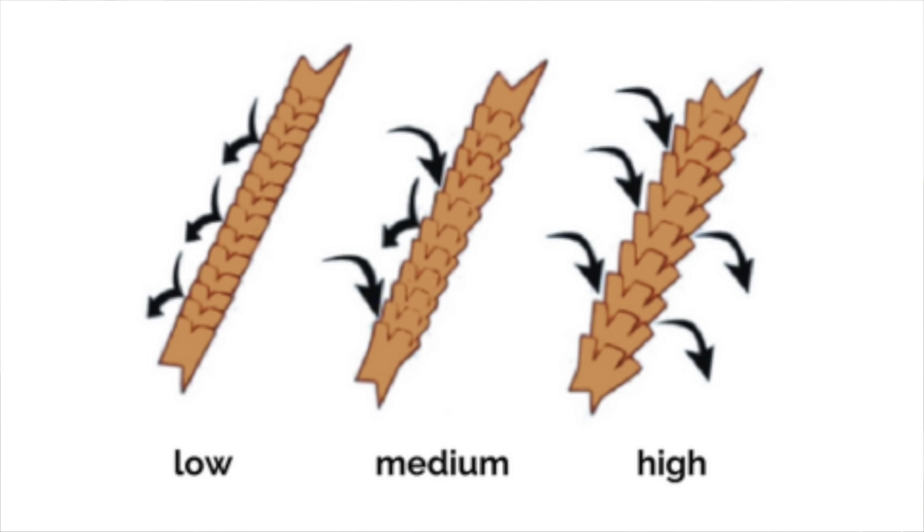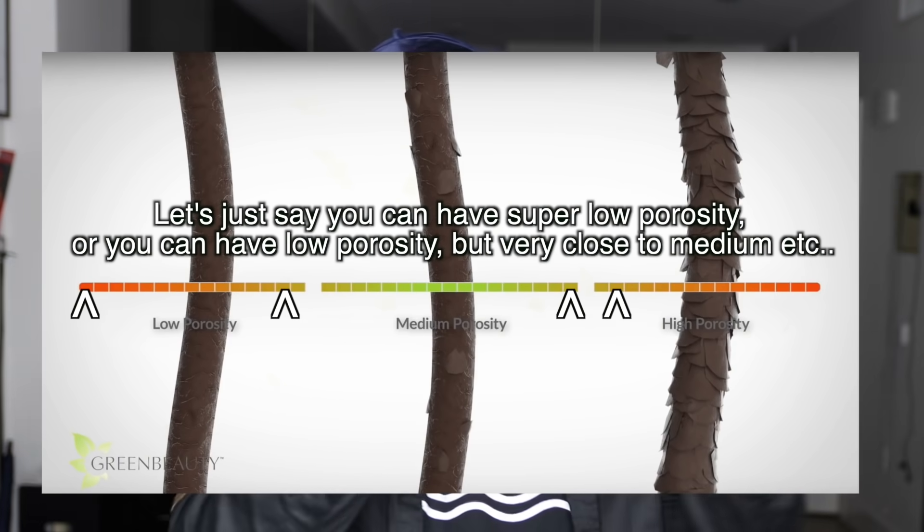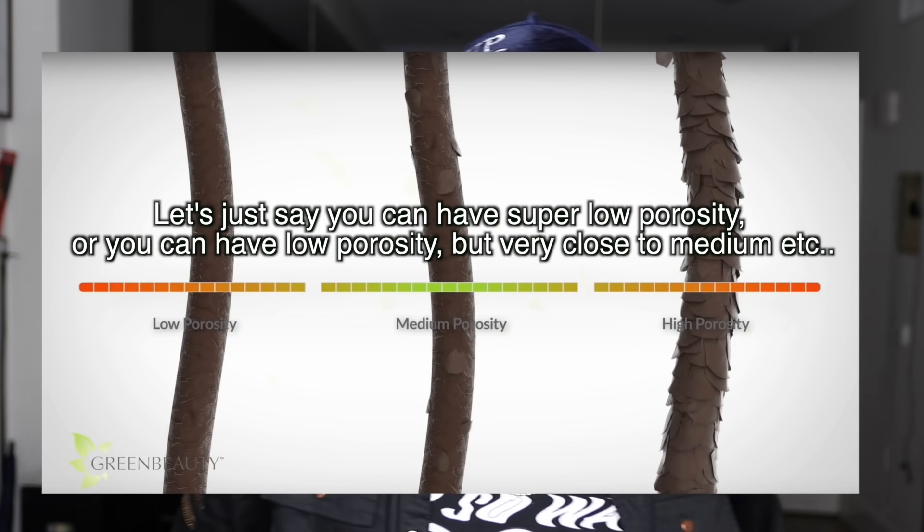Hair porosity describes how well your hair absorbs and retains moisture. I have low porosity hair, which means my hair has cuticles that are tight and my hair does not easily absorb moisture. One thing to understand is that it's not as simple as just low, medium, or high — you can be within a range. You can have extremely low porosity or low porosity closer to medium, which makes it a little more difficult to understand.